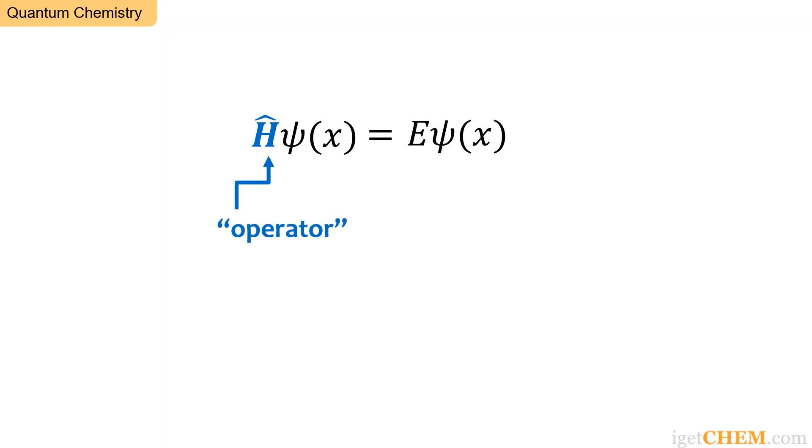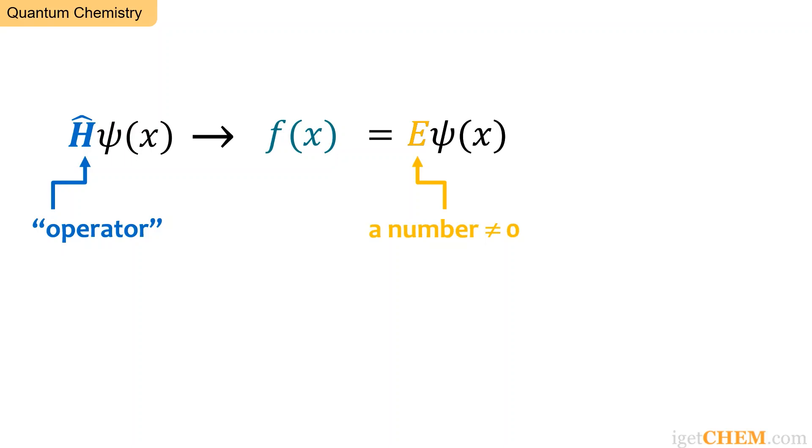An operator operates on the function following it, transforming psi of x to some output function, say f of x. The right side states that the output f of x is just equal to the original psi of x multiplied by a number E, not including zero.